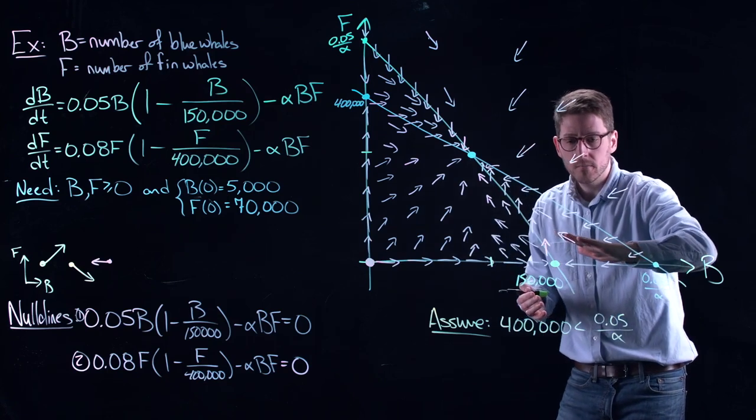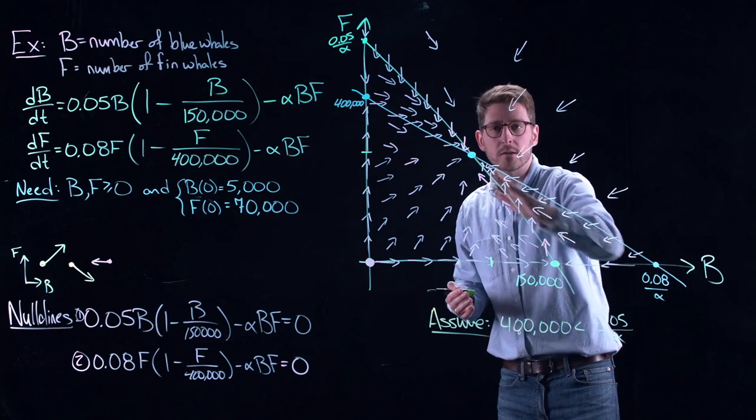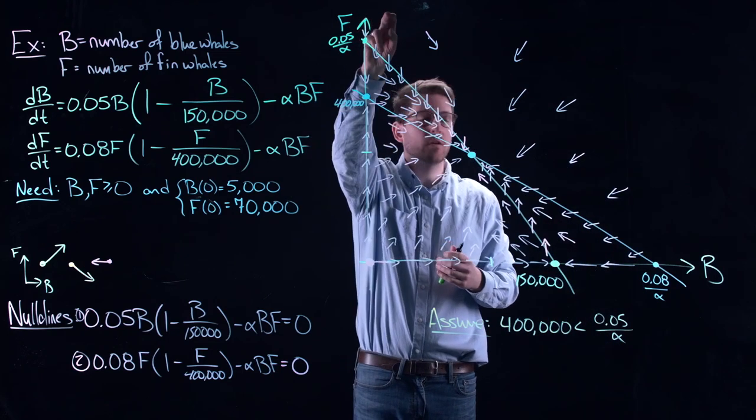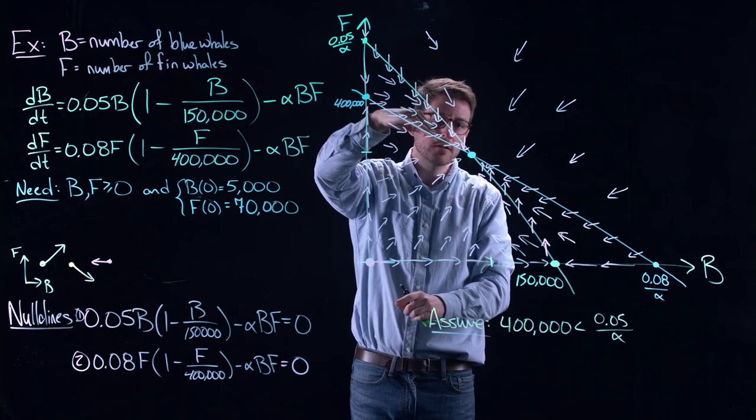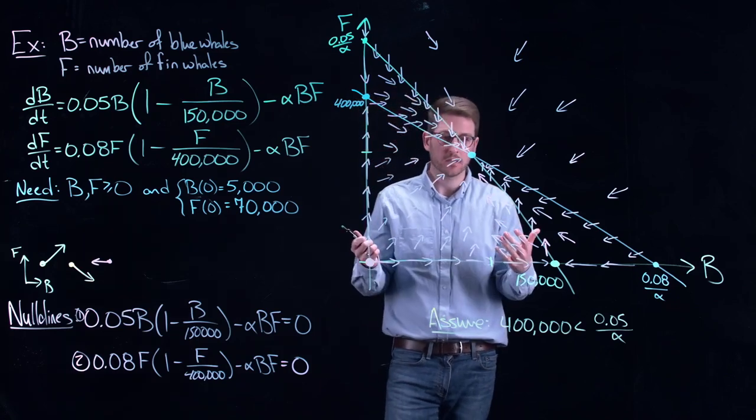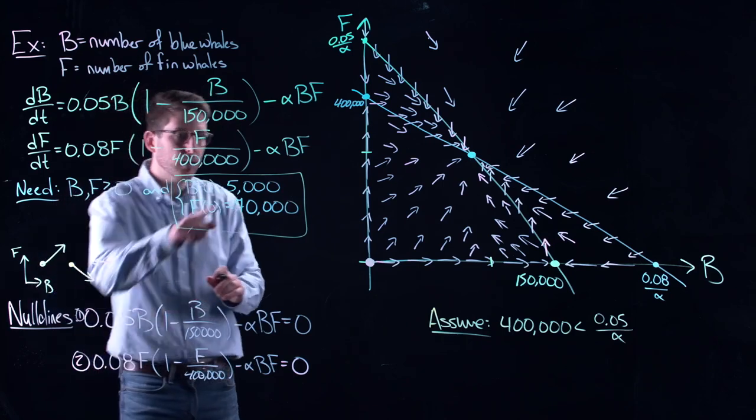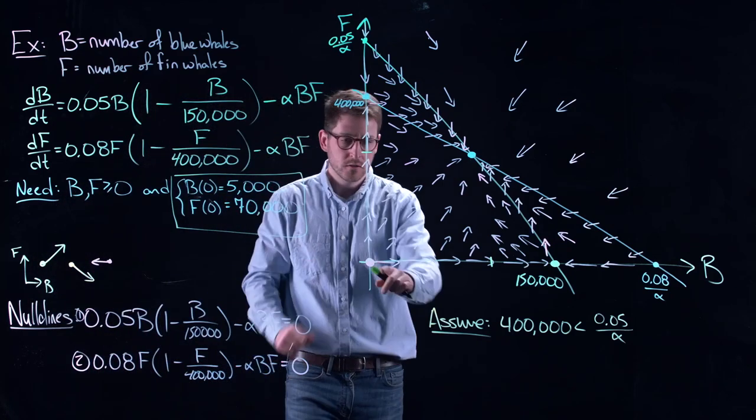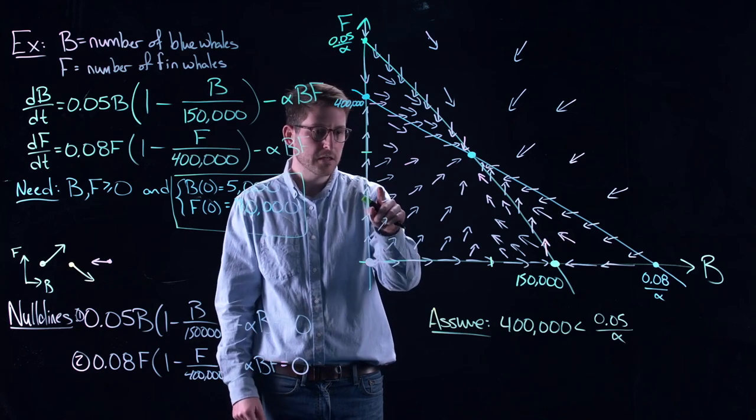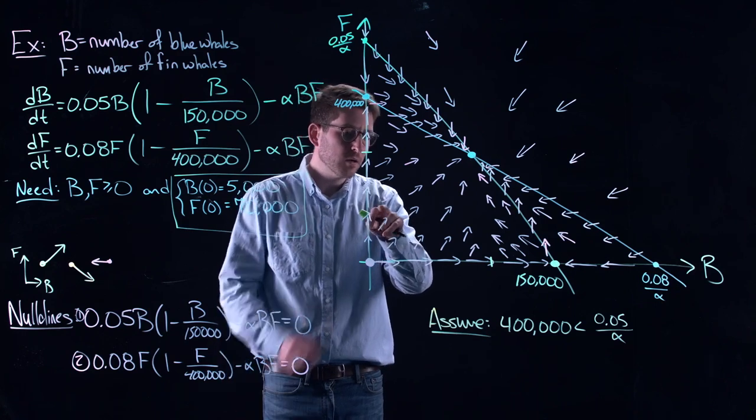Same thing. If I come in here, maybe my solution looks like it is increasing up and it gets pulled into my coexistence state. If I start way up here, lots of fin whales, not many blue whales, I get sort of pulled down into my equilibrium at my coexistence. So, if we think about where we actually started, we said that we measured the blue whale population to be 5,000. So, somewhere, you know, way down here. And the fin whale population, somewhere around here, around 70,000. Not to scale, obviously. But what is going to happen? The populations are going to grow.